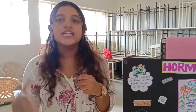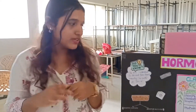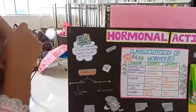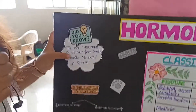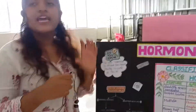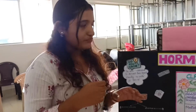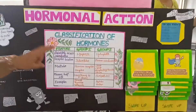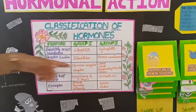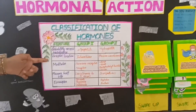Hormones are the chemical substances which are the creatures of endometrics. These hormones control and regulate the body action by specific cells. The word is derived from a root which means to excite or stimulate. Based on the classification, it is recorded into two groups: Group 1 and Group 2, based on the solubility of the system.